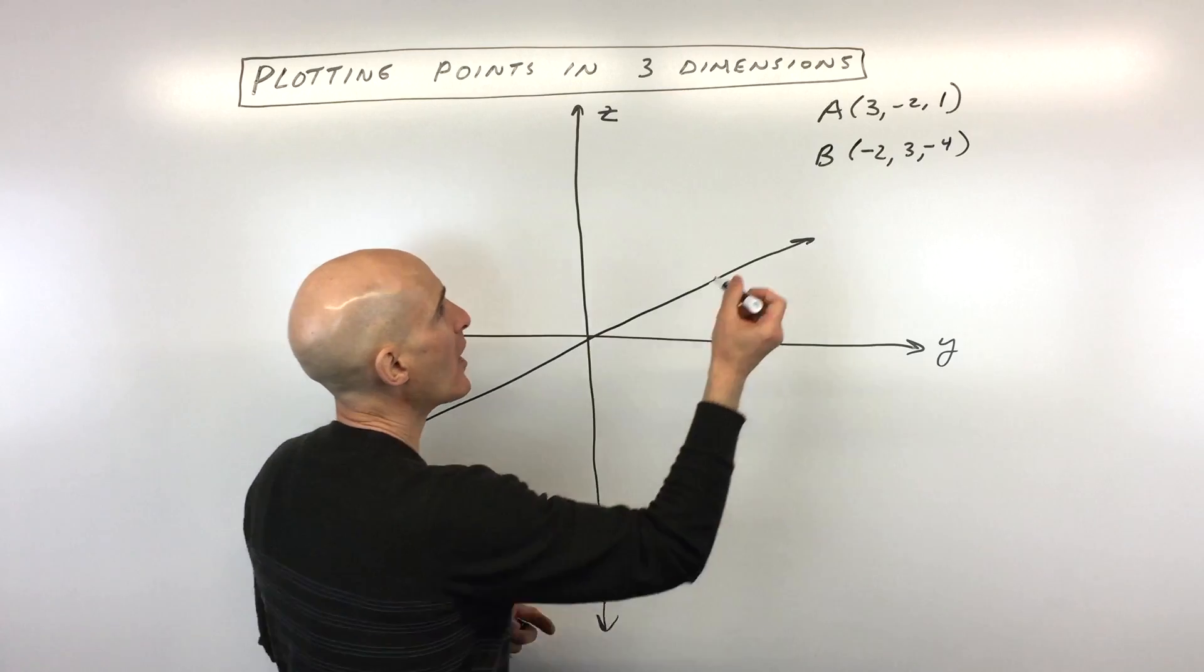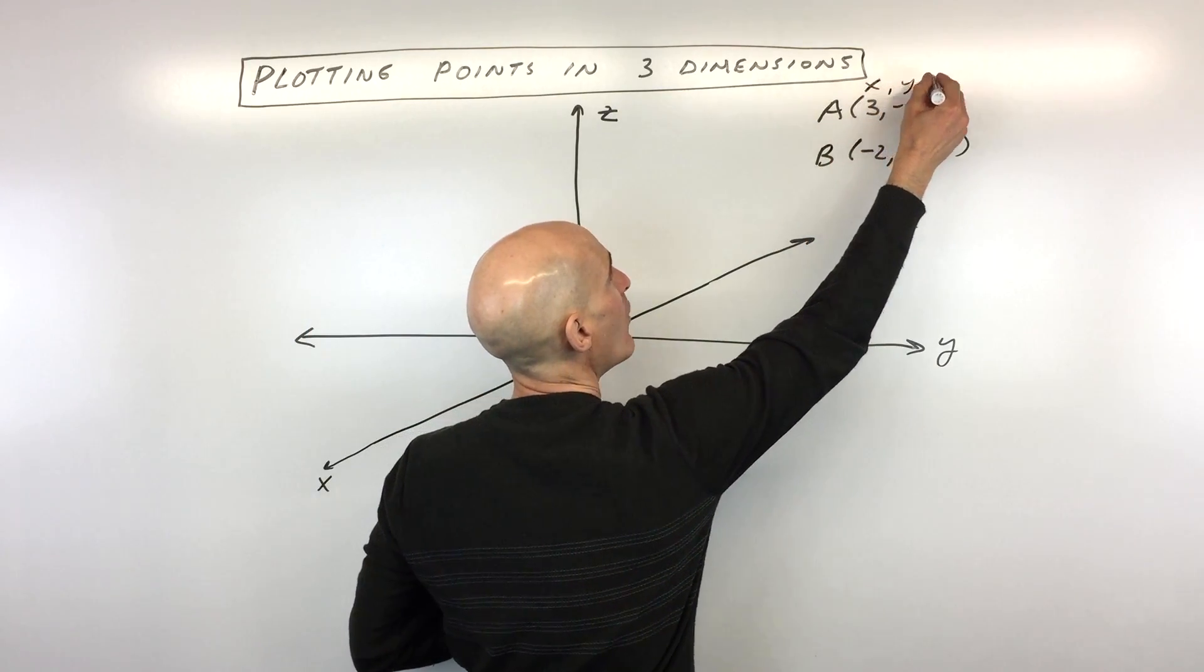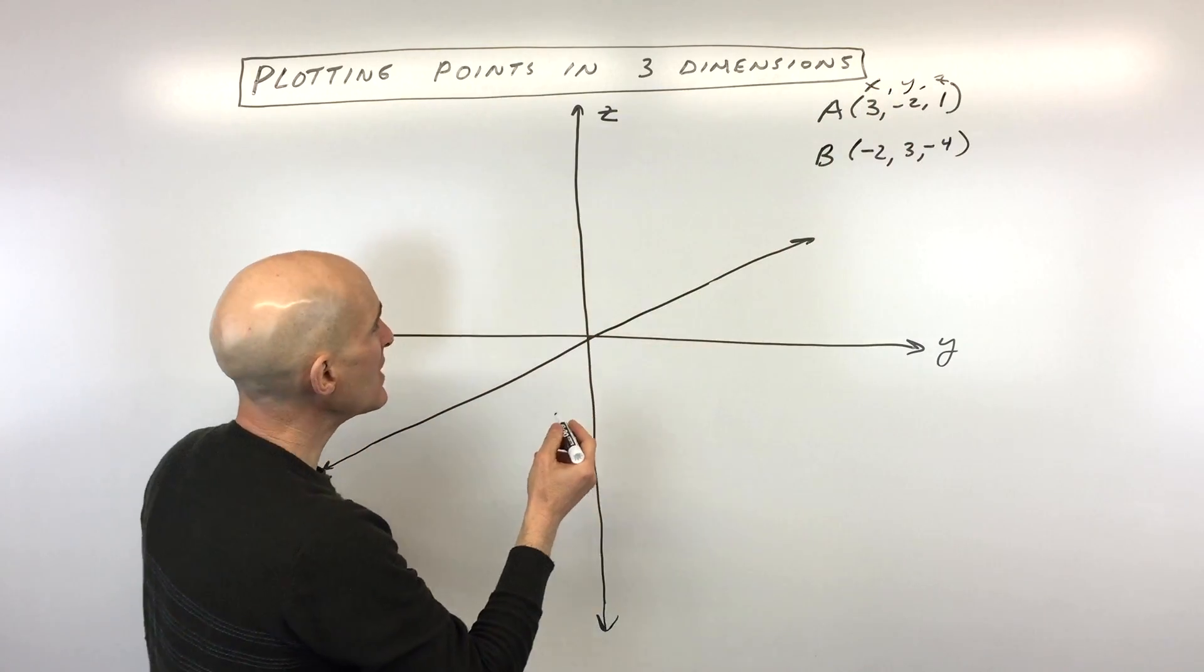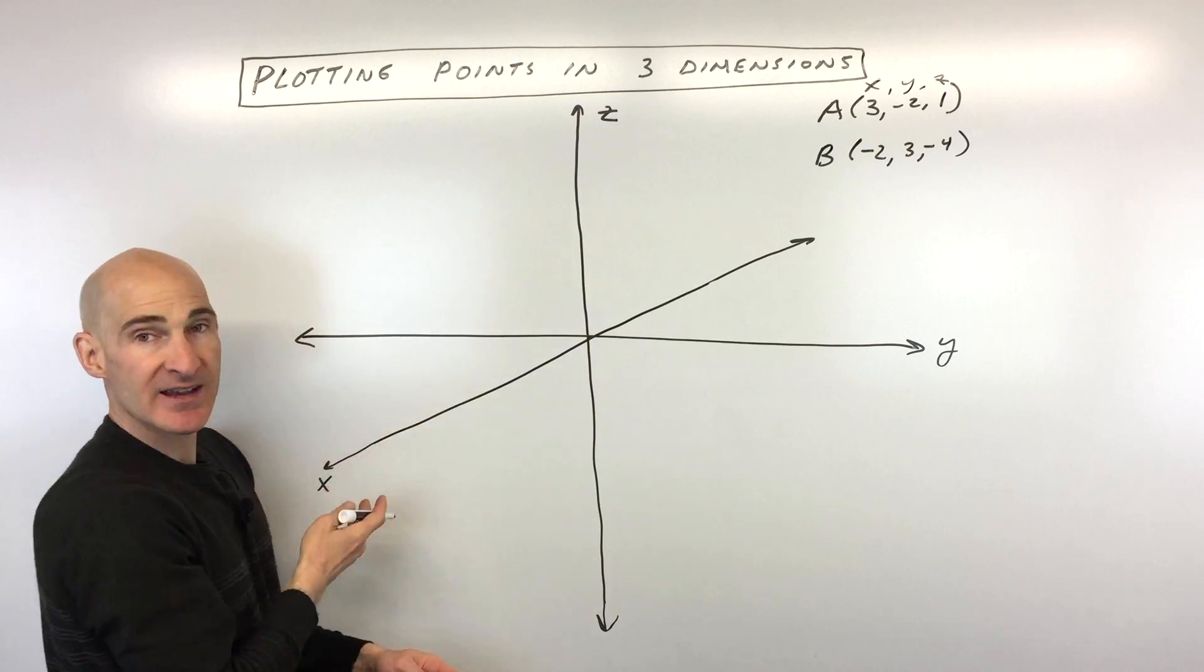So A is (3, -2, 1). And remember, this is alphabetical: x, y, z. So three—we're going to go three in the positive x direction.